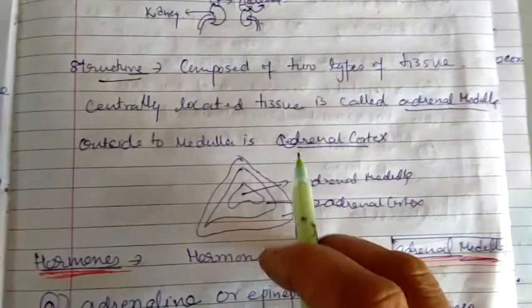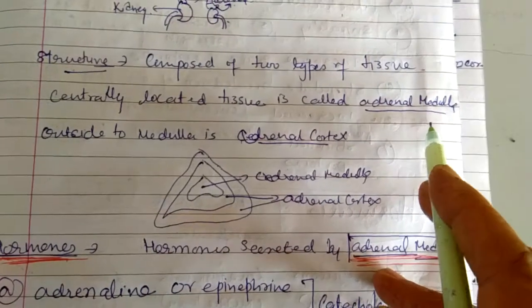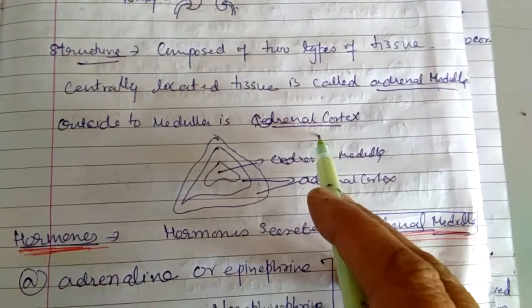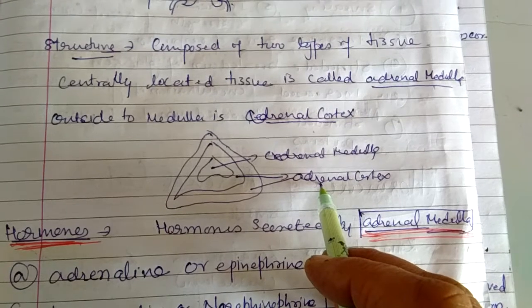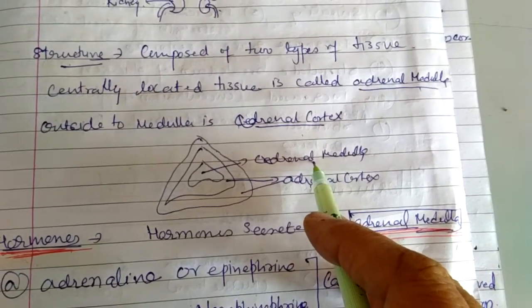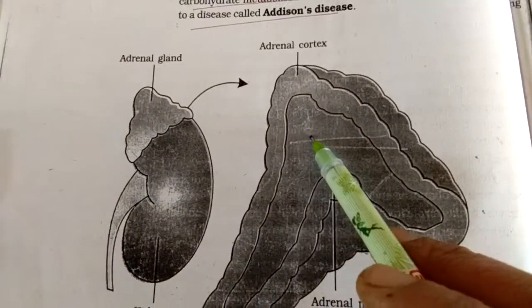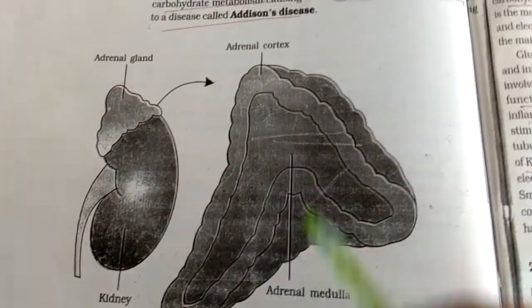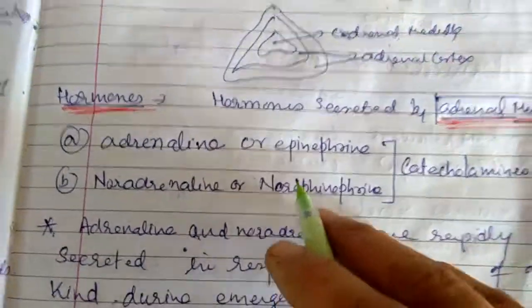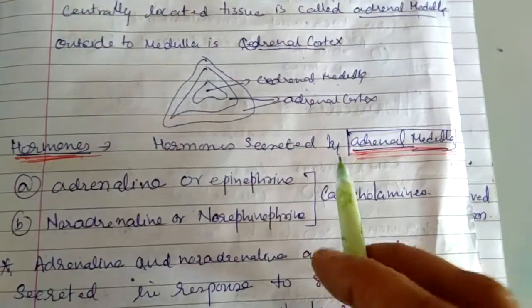Now comes the structure of the adrenal gland. The tissue of the adrenal gland is further divided into adrenal medulla and adrenal cortex. The adrenal cortex is the outside part, and the internal, centrally located part is called the adrenal medulla. In the book also it is shown — this is adrenal medulla and the outside part is adrenal cortex. Both the medulla and cortex secrete different hormones.